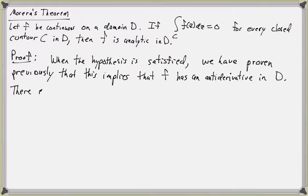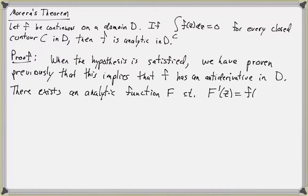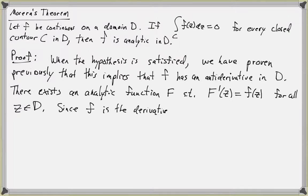So there exists an analytic function capital F such that the derivative of capital F at Z equals F of Z for all Z in the domain D. But since F is the derivative of an analytic function, the previous corollary implies that F is analytic.